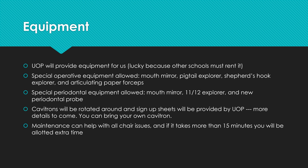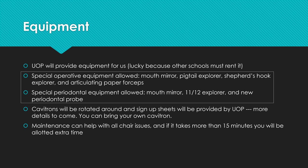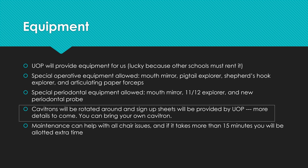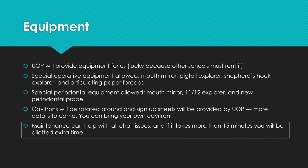For equipment, UOP will provide all equipment — at some schools you have to rent it. Special equipment for operative includes mouth mirror, pigtail explorer, shepherd's hook, and articulating paper forceps, all in our cassette. For perio, special equipment includes mouth mirror, 11/12 explorer, and a new perio probe. For cavitrons, there's a limited number at the university so there's a sign-up sheet with approximately 30 minutes allotted per person. You can bring your own cavitron if you want unlimited use. For chair issues, maintenance will be on site, and if repairs take more than 15 minutes that time will be added back to your exam time.